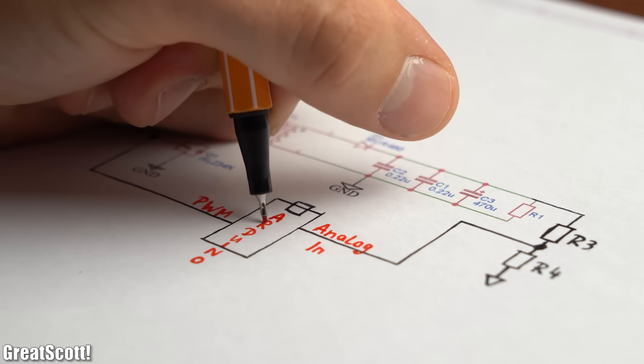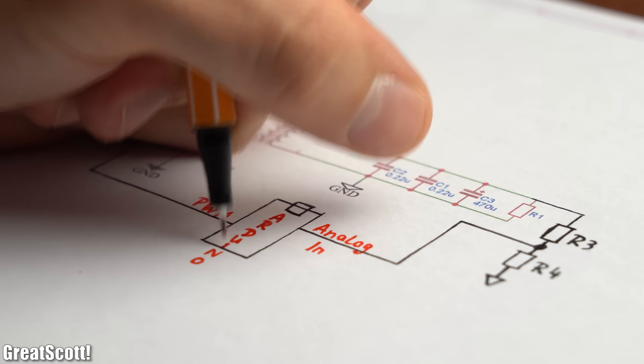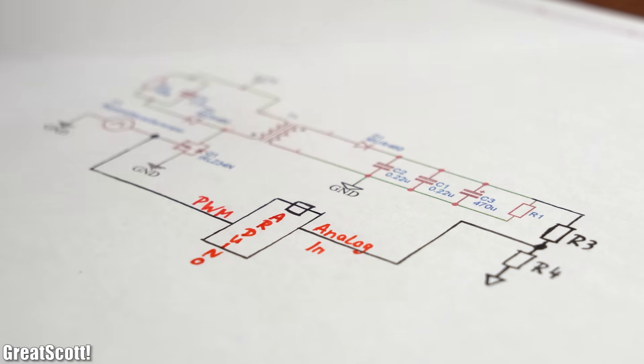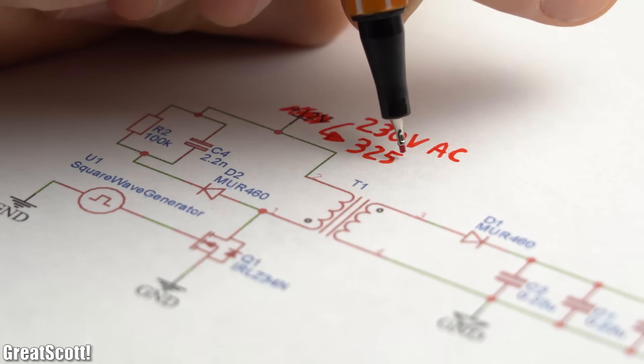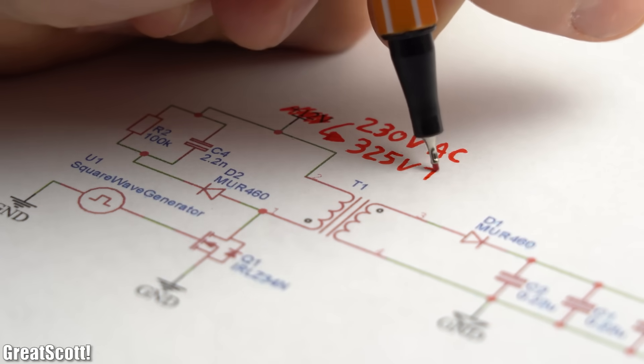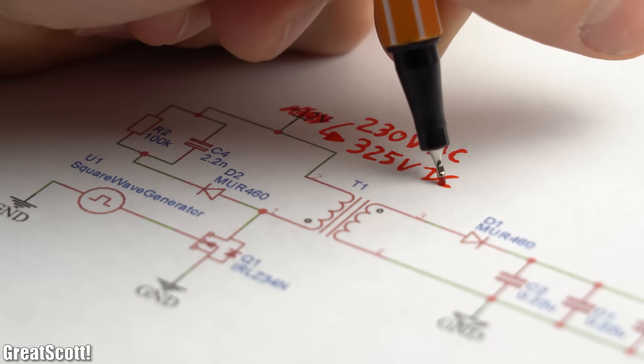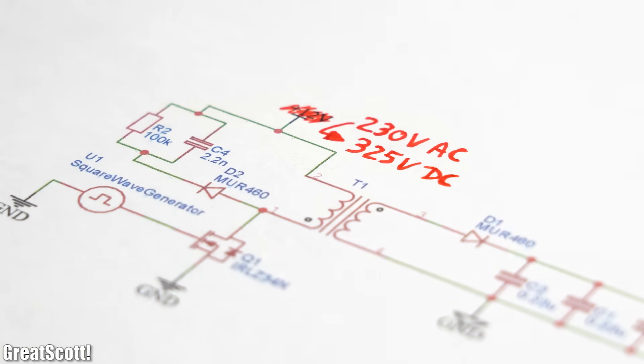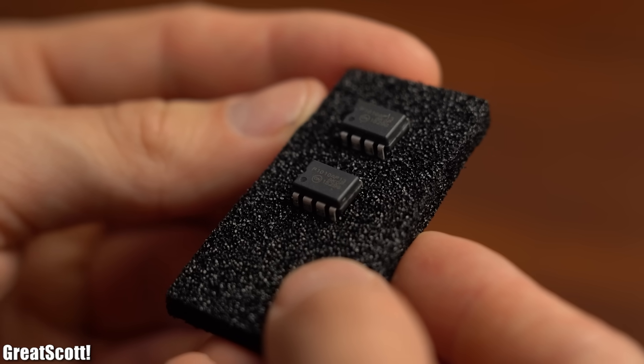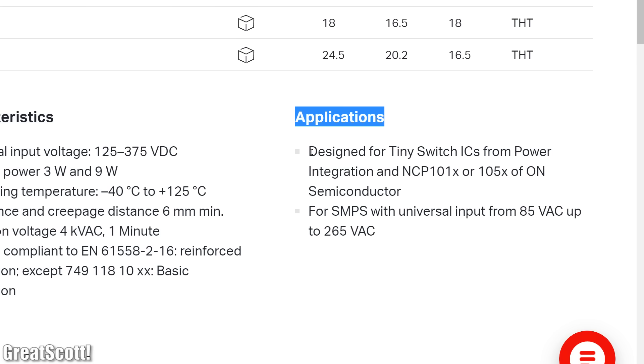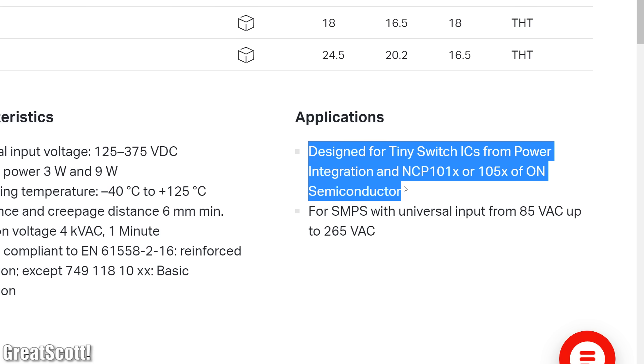Of course we could create such a system by ourselves with, for example, an Arduino microcontroller. But when it comes to mains voltage, then it definitely makes more sense to use an established controller IC. This can be, for example, this NCP1010, which was actually a recommendation from the Würth Electronic website.